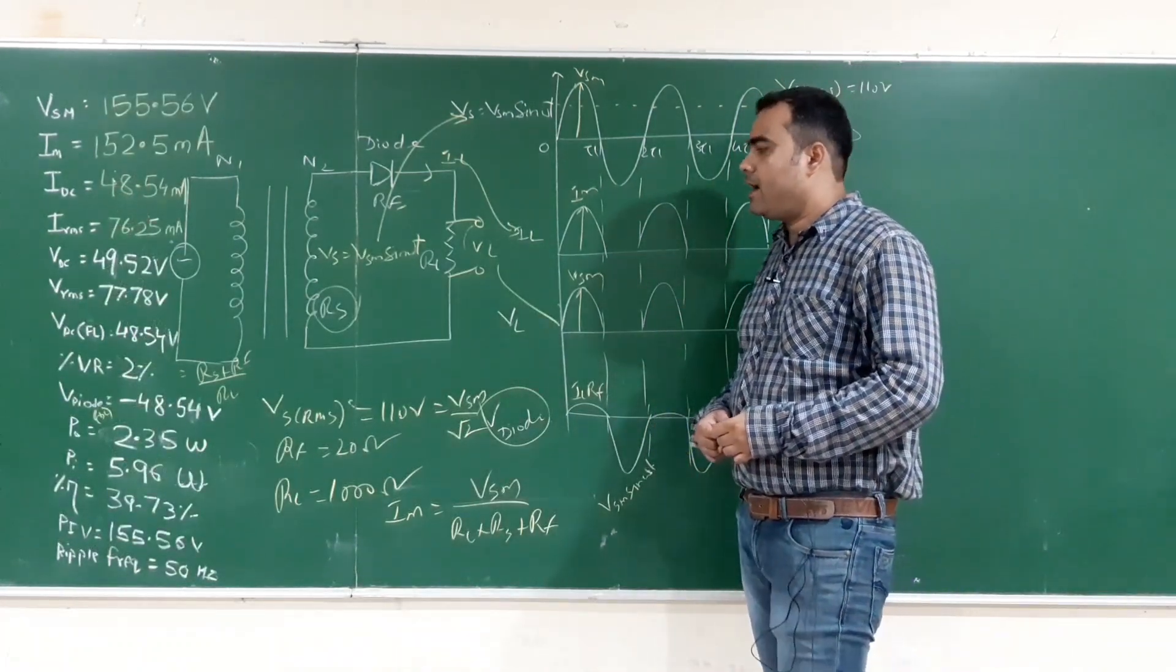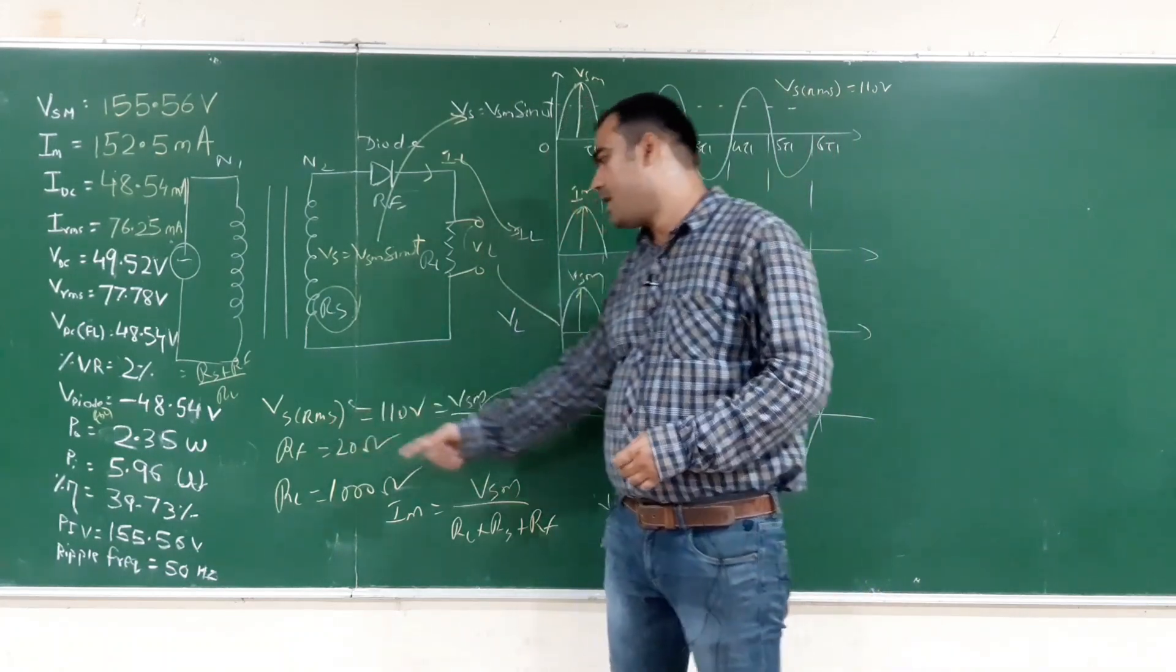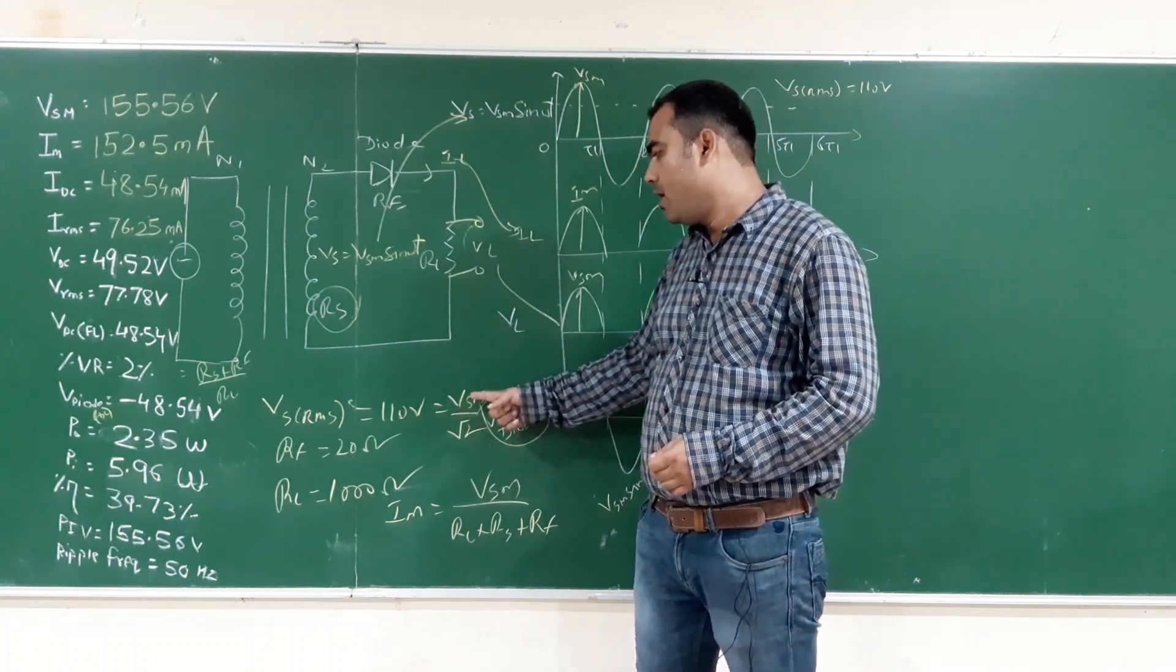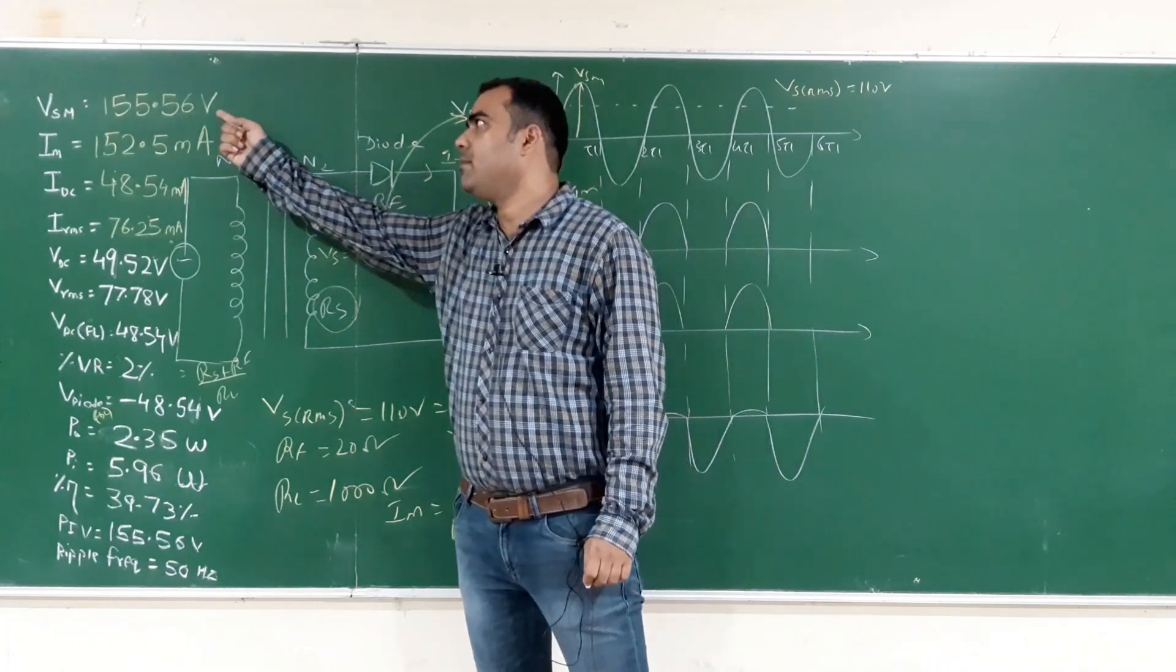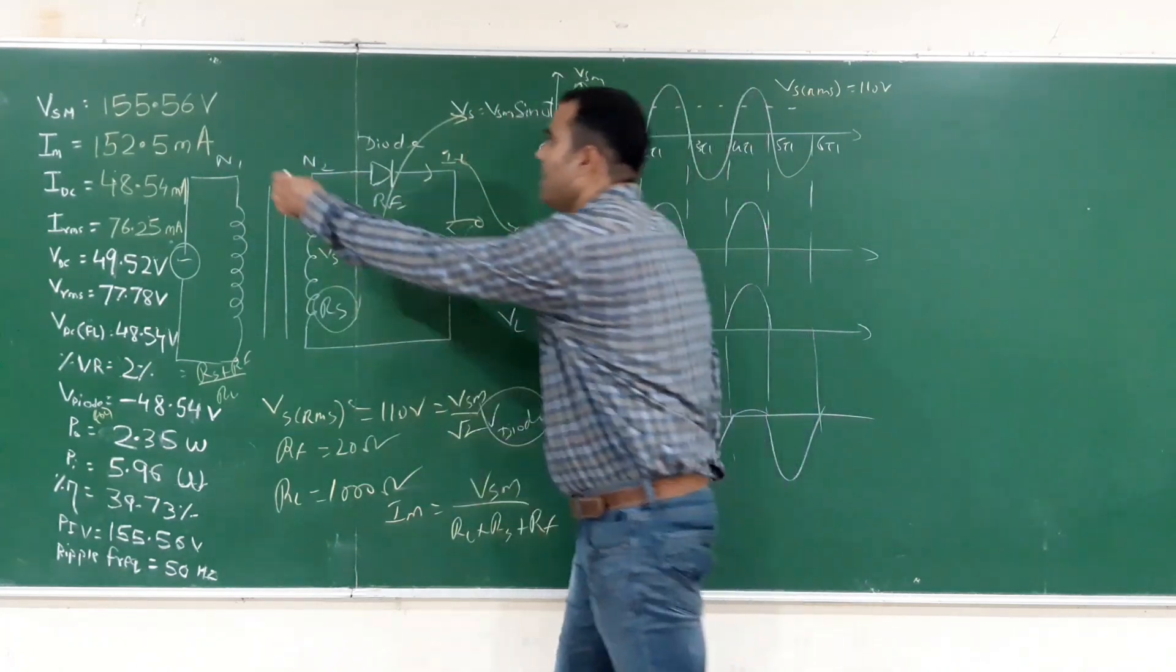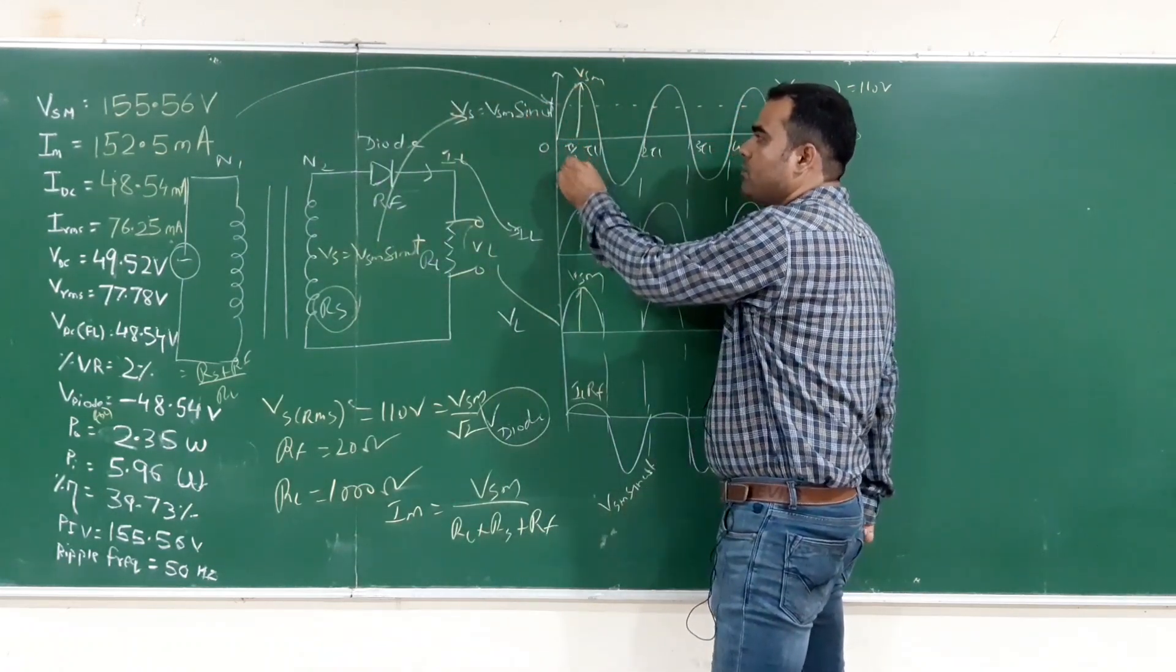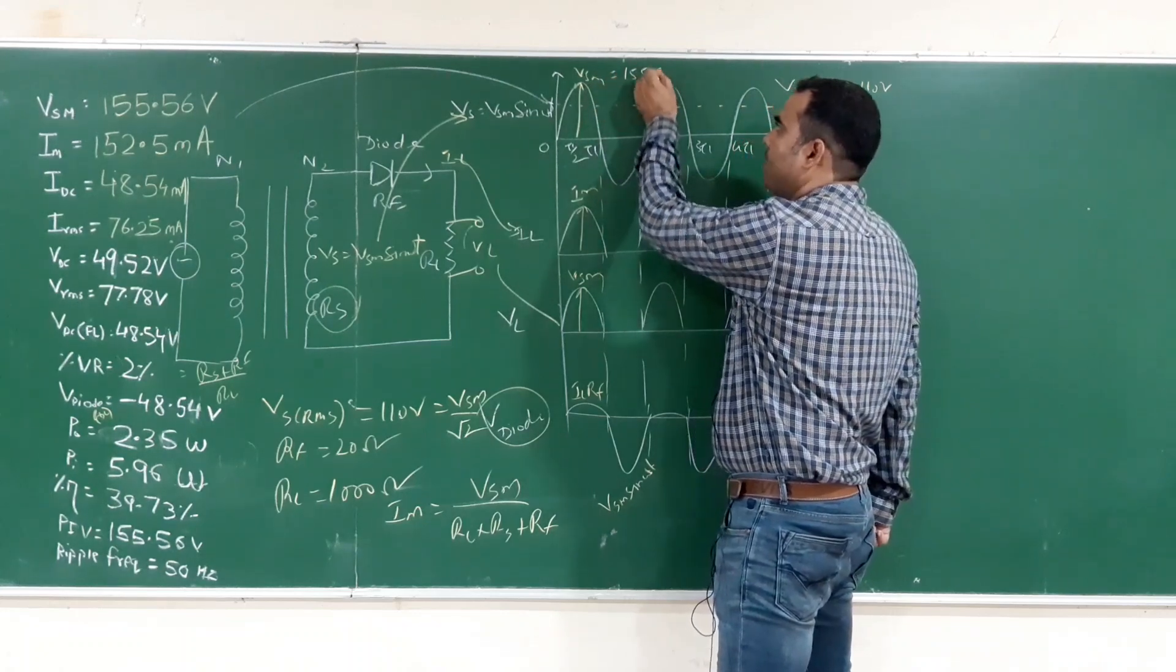On solving this we get VSM. VSM is calculated using formula VSRMS equals to 110 volt equals to VSM by root 2. VSM equals to 110 into root 2. We will get VSM equals to 155.56 volt. This peak value of sine wave is 155.56 volt.